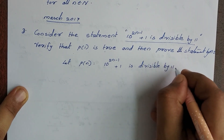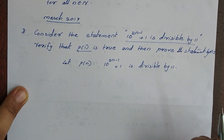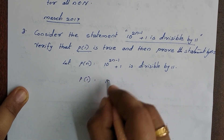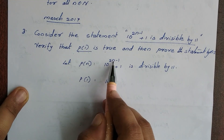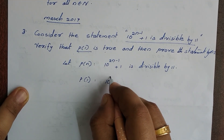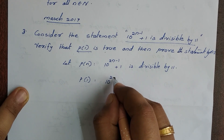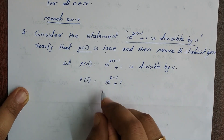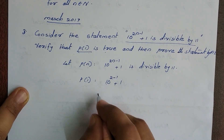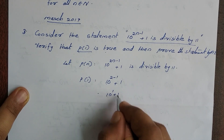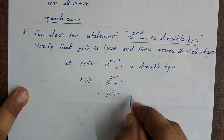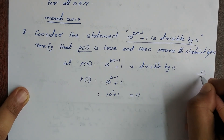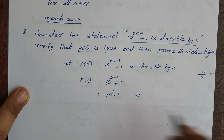To verify P of 1 is true, we substitute n equals 1. That gives us 10 raised to 2 minus 1 plus 1, which is 10 raised to 1 plus 1, and that equals 11. So 11 is divisible by 11, and therefore P of 1 is true.